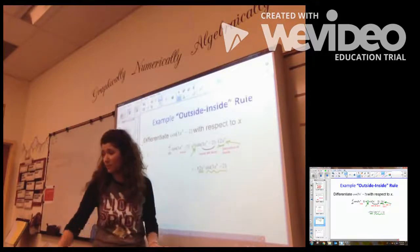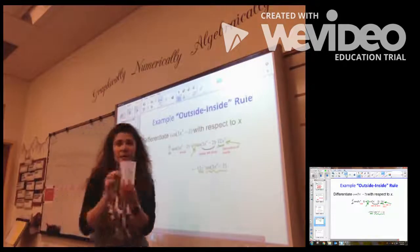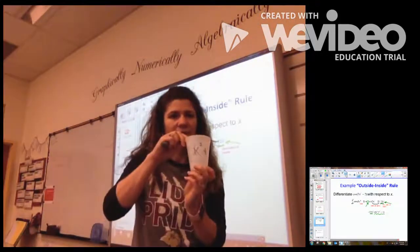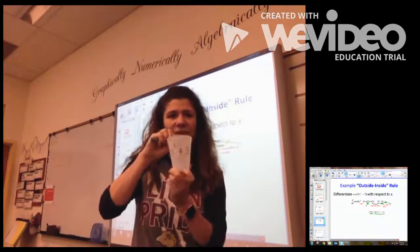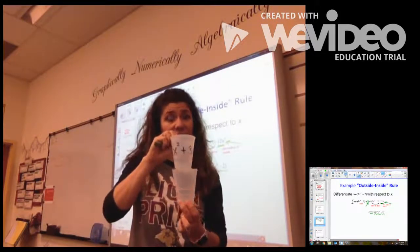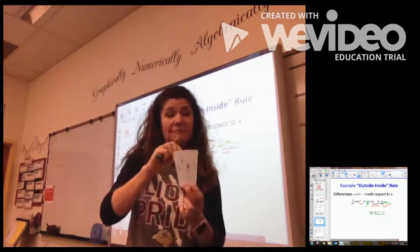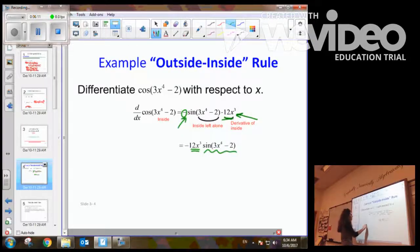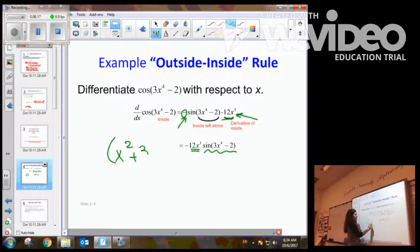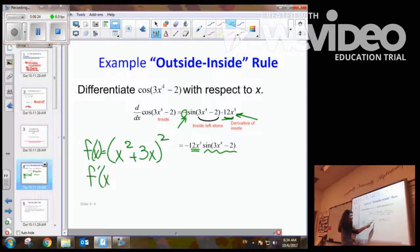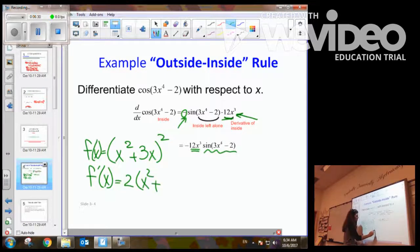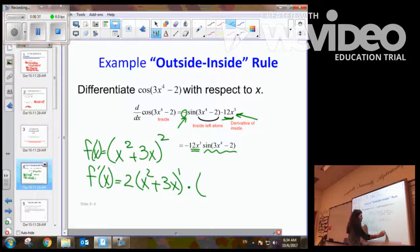Now, how does this relate to our original problem? Our original problem was the quantity x squared plus 3x, squared. I'm going to take the derivative of the outside, which is the squared part — inside stays the same — then multiply it by the derivative of the inside. So I bring the power to the front: 2 times the quantity x squared plus 3x, now to the first power, since 2 minus 1 equals 1, multiplied by the derivative of the inside, which is 2x plus 3.